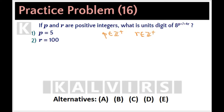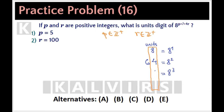In order to find the unit digits of the powers of 8, we're going to do the following. 8 to the first power has unit digit 8. 8 squared is 64, but we're going to focus only on the unit digits. Then we get that 8 cubed has a unit digit of 2, and 8 to the fourth power has a unit digit of 6. 8 to the fifth power has a unit digit of 8. 8 to the sixth power has a unit digit of 4. 8 to the seventh power has a unit digit of 2, and 8 to the eighth power has a unit digit of 6.